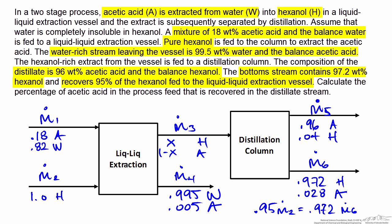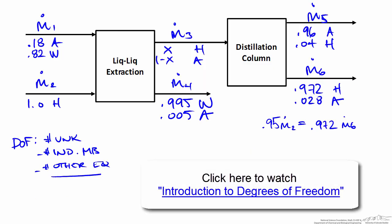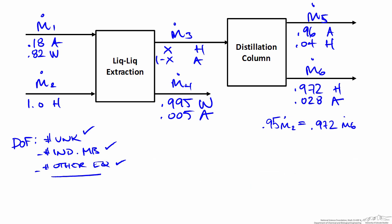We've now accounted for all information in the problem statement. We need to calculate the percentage of acetic acid in the process feed that's recovered in the distillate. Before writing and solving equations haphazardly, the next step is a degree of freedom analysis on every system in the process — the liquid-liquid extraction column, the distillation column, and the overall process — to find the easiest way to proceed.